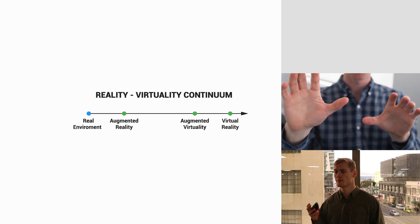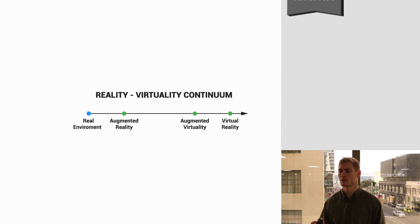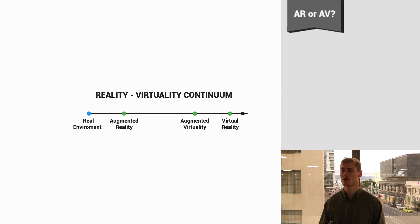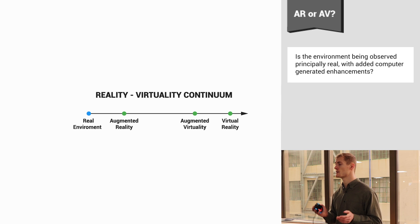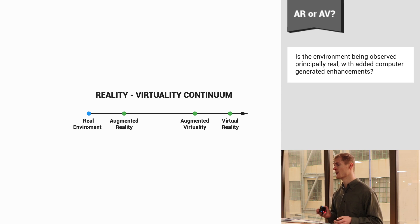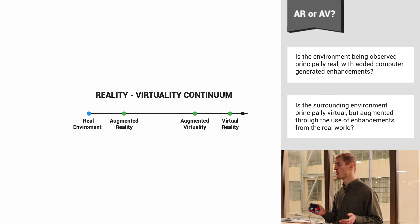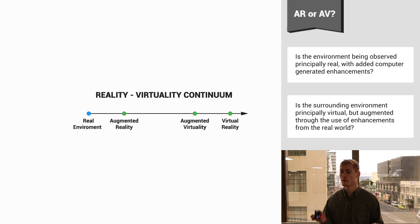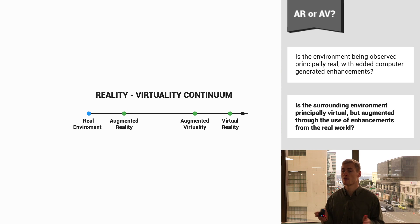To help differentiate between augmented reality and augmented virtuality, in 1995 Milgram and Kishino, with the help of Takamura and Utsumi, composed a set of questions: Is the environment being observed principally real with added computer-generated enhancements? Or, is the surrounding environment principally virtual, but augmented through the use of enhancements from the real world? If the first question is true, then the reality can be assumed to be principally augmented reality, while if the second answer is true, the reality can be assumed as principally augmented virtuality.